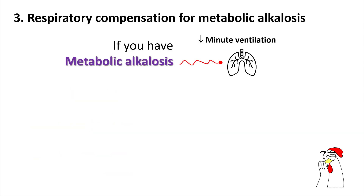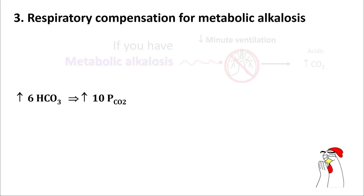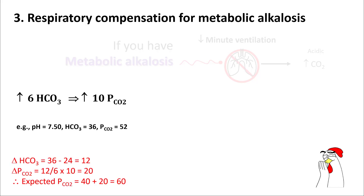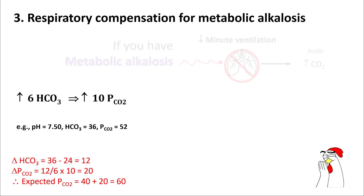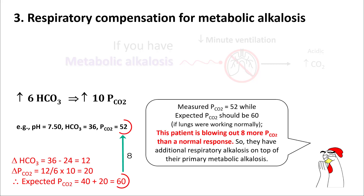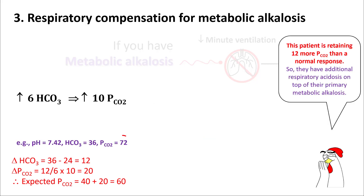Respiratory compensation for metabolic alkalosis works similarly. If you are alkalotic, you have decreased minute ventilation and accumulate CO2, making blood slightly more acidic. Every 6 mEq/L rise in bicarb increases pCO2 by about 10. For example: pH 7.5, bicarb 36, pCO2 52. Bicarb rose from 24 to 36 — a change of 12 points. Since 6 bicarb increases pCO2 by 10, a change of 12 should increase it by 20, giving expected pCO2 = 40 + 20 = 60. But measured pCO2 is only 52, meaning you are blowing out 8 more CO2 than expected — additional respiratory alkalosis on top of the primary metabolic alkalosis. If pCO2 were 72 instead, you would be retaining 12 more CO2 than expected, indicating additional respiratory acidosis. Note: respiratory compensation for metabolic alkalosis is not very accurate, so interpret it with caution.